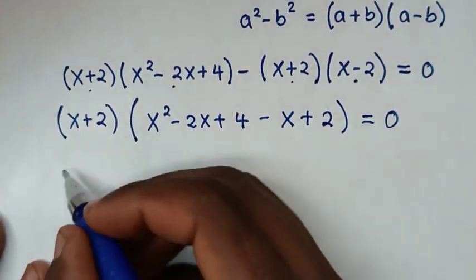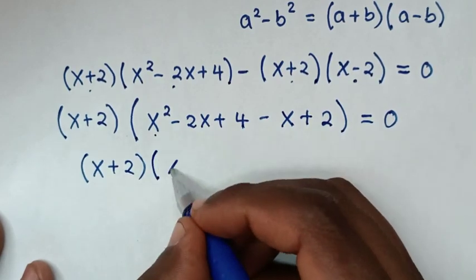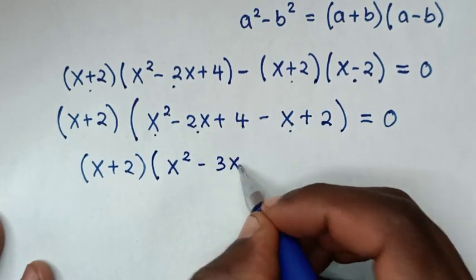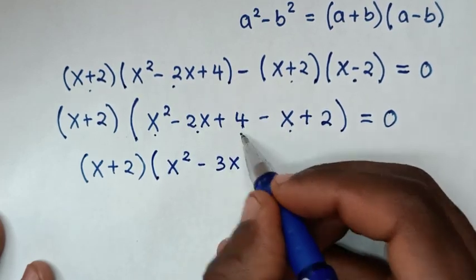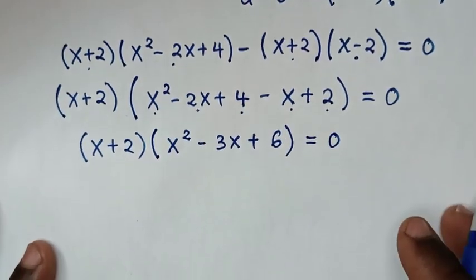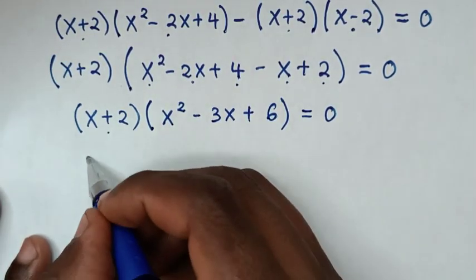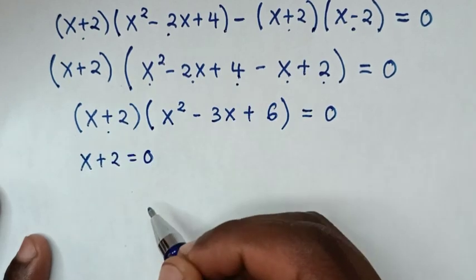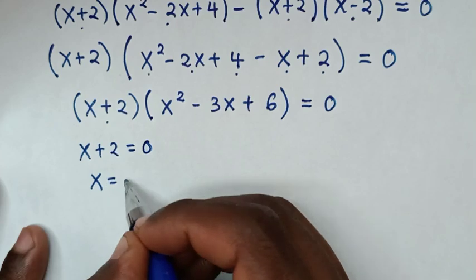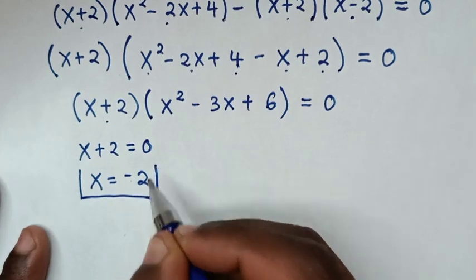Then in the next step, x plus 2 is common, so we take x plus 2 outside the bracket. We simplify to get bracket x plus 2 bracket times bracket x squared minus 3x plus 6 bracket equal to 0. From here we have two solutions. The first solution: x plus 2 equals 0, so x equals negative 2.